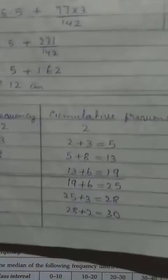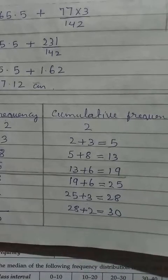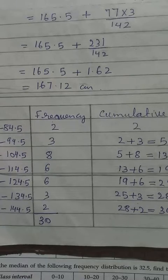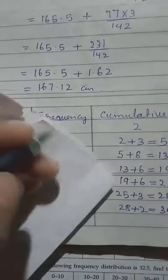So here, the total cumulative frequency, we get 30. There also, 30. So now we can find the, in order to use the value for median, we have to find the median class.